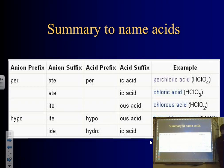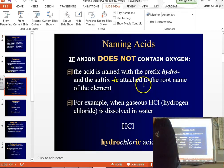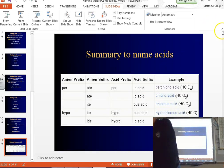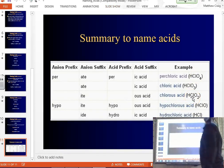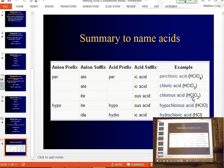Here's a summary table using the chlorate family: ClO3 is chlorate. Add one oxygen and you get perchlorate — perchloric acid, with -ic because it ends in -ate. Take one oxygen away and you get an -ite ending — chlorous acid with -ous. Take two away and it's hypo plus -ous. Remove all oxygens and it's hydrochloric. This is a quick guide to refresh your memory on acid naming.